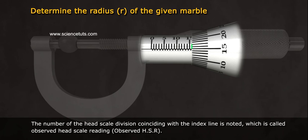The number of the head scale division coinciding with the index line is noted, which is called observed head scale reading, observed HSR.